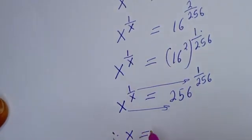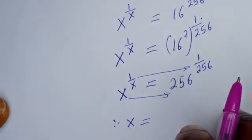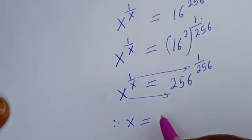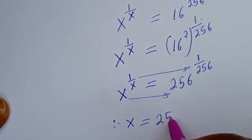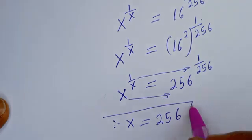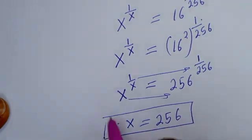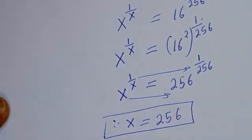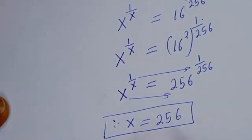By comparing both sides — this equals this and this equals this — therefore s is equal to 256. This is the final answer. We can check to confirm if this answer is right or wrong.